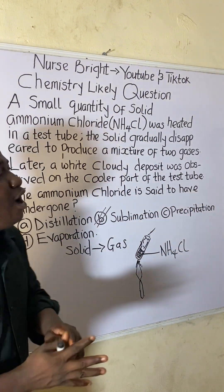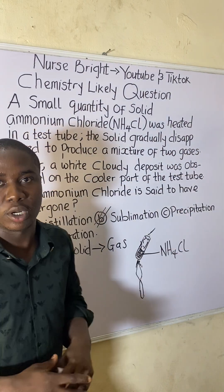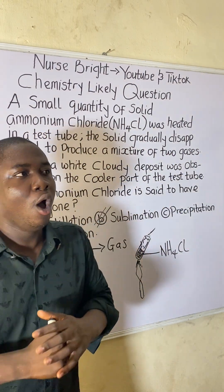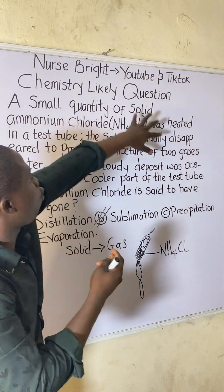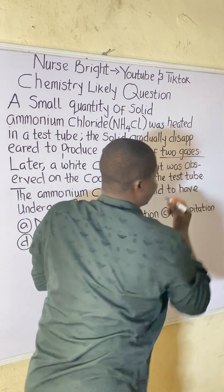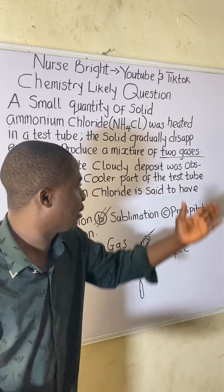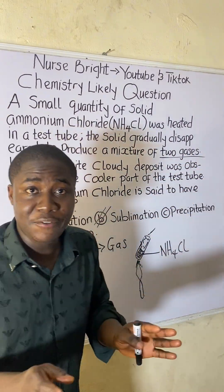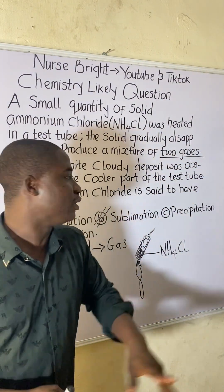Option C is precipitation. Precipitation works on the principle of formation of a solid. But what was formed here was gases, not a solid. So definitely the answer is not precipitation.